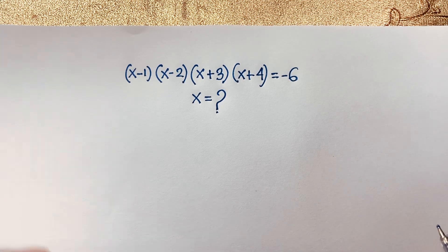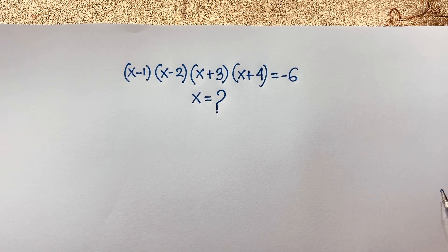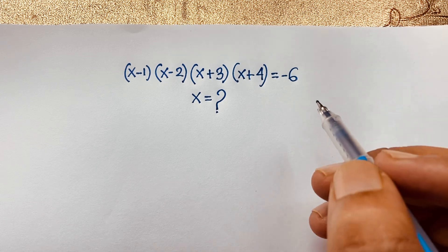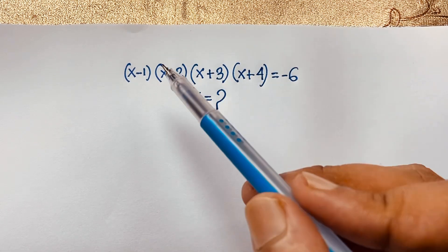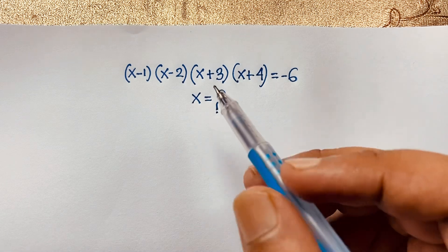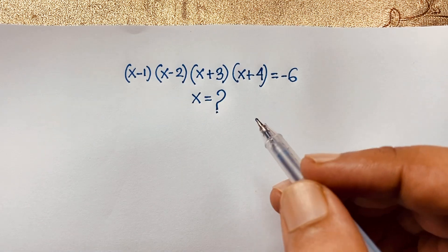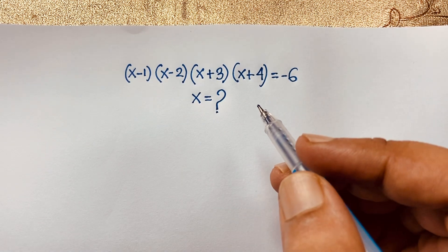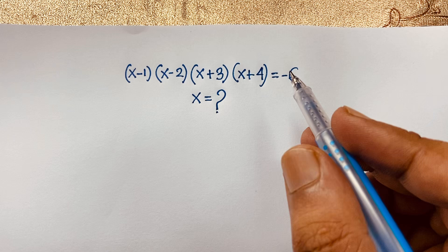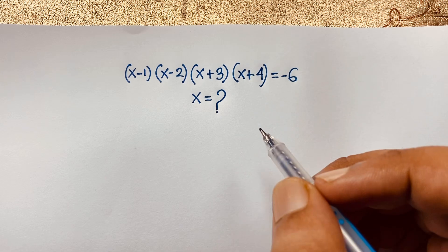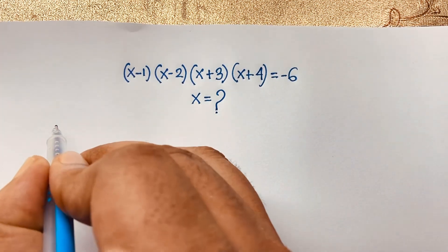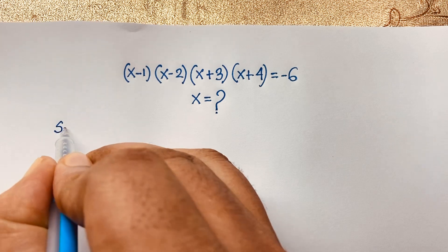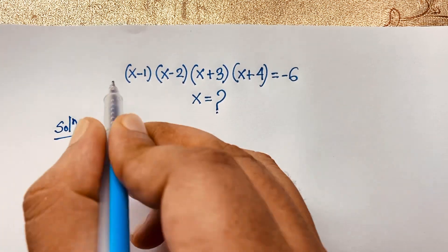Hello everyone, welcome to my YouTube channel, welcome to Russia's Classroom. Today we have solved an interesting math problem. The question is: (x minus 1)(x minus 2)(x plus 3)(x plus 4) is equal to negative 6. What is x? How to solve this interesting Math Olympiad question.